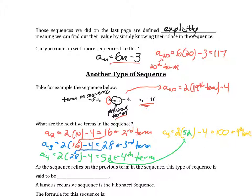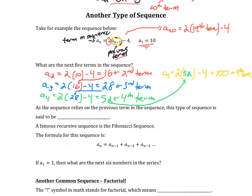This type of sequence — which relies on the previous term — is called a recursive sequence. With explicit sequences, we could just plug in a number for n. With recursive sequences, to find the tenth term you have to find the ninth, eighth, seventh, and so on all the way back to the first. Recursive sequences are a lot more work, and you won't see a ton of them, but you will see some.